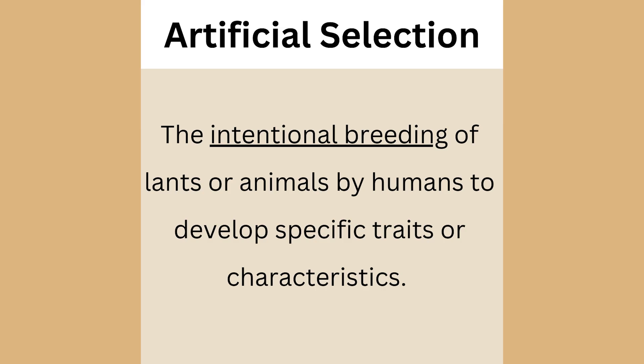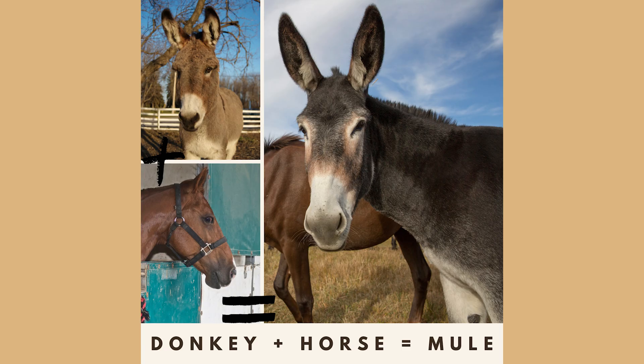This is a form of artificial selection. Artificial selection is the intentional breeding of plants or animals by humans to develop specific traits or characteristics. Unlike natural selection, where environmental pressures drive the survival and reproduction of organisms, artificial selection is driven by human preferences or agricultural needs. Let me give you a really simple example — the mule.